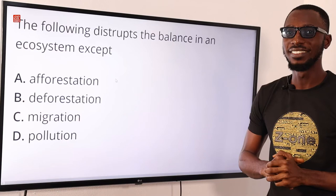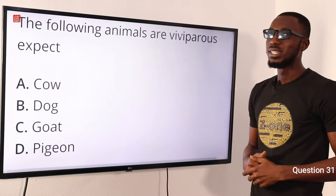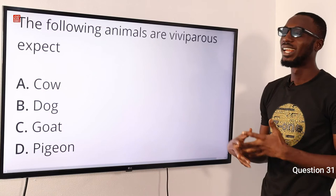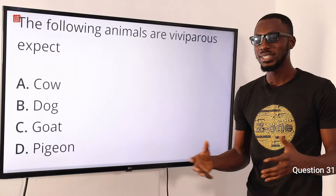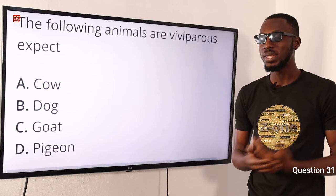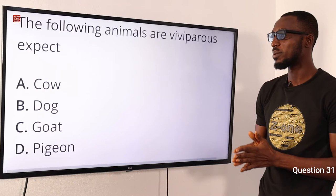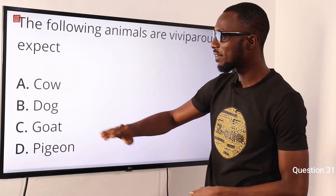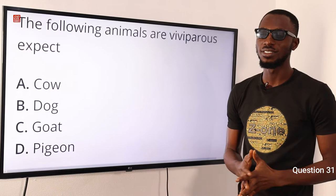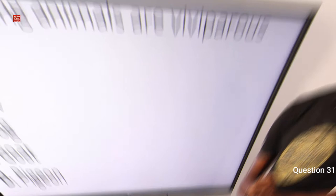Question 31: The following animals are viviparous except what? Viviparous animals give birth to live young, while oviparous animals lay eggs — such as fishes, amphibians, and reptiles. Looking through the options, bats, dogs, and humans give birth to live young, but pigeons lay eggs. So the correct answer is option D for pigeons.